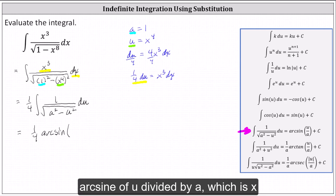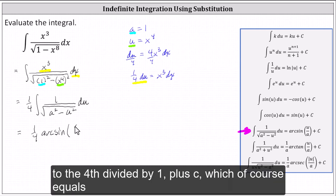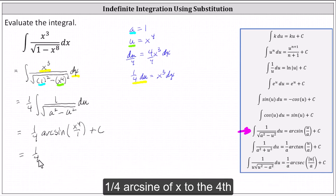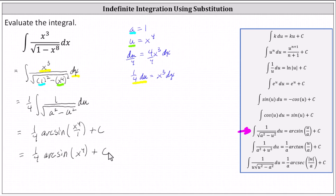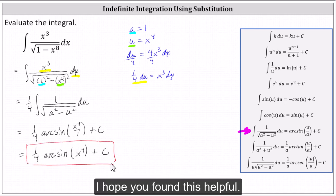This is x to the fourth divided by one, plus c, which of course equals one-fourth arcsine of x to the fourth plus c. I hope you found this helpful.